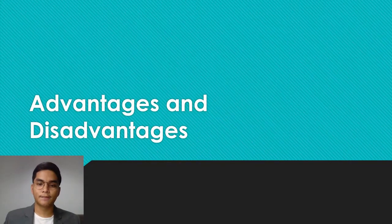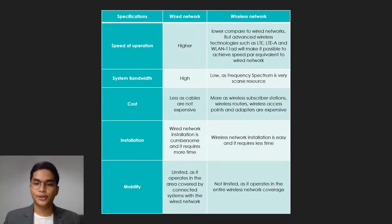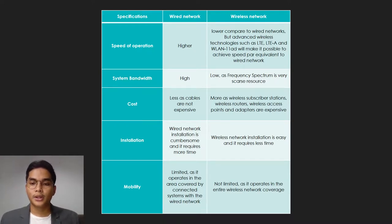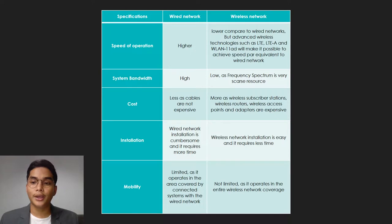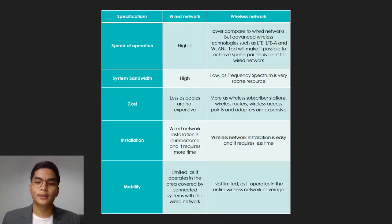Advantages and disadvantages: there is a comparison table here of specifications for wired and wireless networks. The first parameter is speed of operation. In the wired network, the speed of operation is higher. In the wireless network, it is lower compared to wired networks, but advanced wireless technologies such as LTE, LTE-A, and WLAN will make it possible to achieve speeds equivalent to wired networks. The second parameter is system bandwidth. In the wired network, system bandwidth is higher. In the wireless network, system bandwidth is low as frequency spectrum is a very scarce resource.